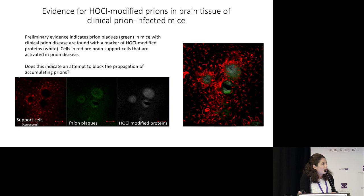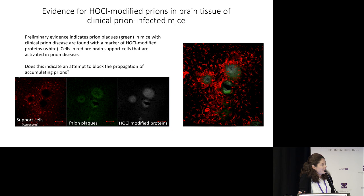Now while those experiments are ongoing — and it's actually going to be a couple of months before we expect to see clinical signs of disease in these animal models — what I can tell you is that I do have preliminary evidence indicating that hypochlorous acid is produced in response to a prion infection in the brain of infected animals, and we believe it is modifying the prions itself.